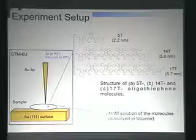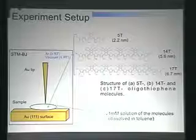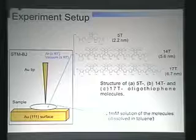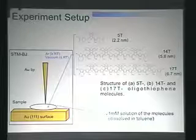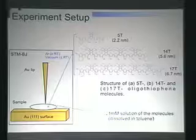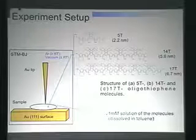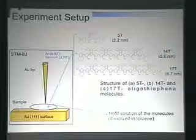So this is for my experimental work. The molecule which I use for my work is oligothiophene molecule. I conduct experiment for three different molecules, known as 5T, 14T and 17T, each having a different length. The shortest being 2.2 nanometer, while the longest one which I use for my experiment is 6.7 nanometer. These molecules are dissolved in toluene. I conduct my experiment in two different conditions. First, for room temperature and higher and above, I conduct in argon gas condition. While for room temperature and lower temperature, I conduct it in vacuum condition.